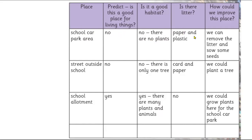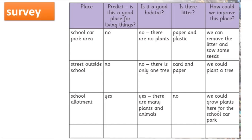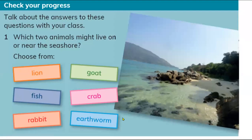Some people make the park and school dirty — they throw papers and plastic inside the car park or the park. How could we improve this place? We can remove the litter, pick it up, and sow seeds to make new plants. Find a place, find out what the problem is, and work out how to fix it. That was the survey.